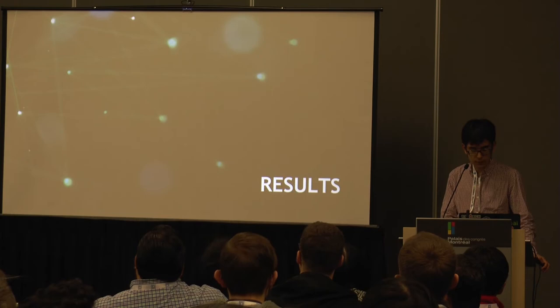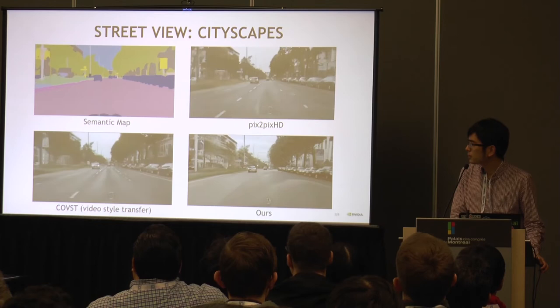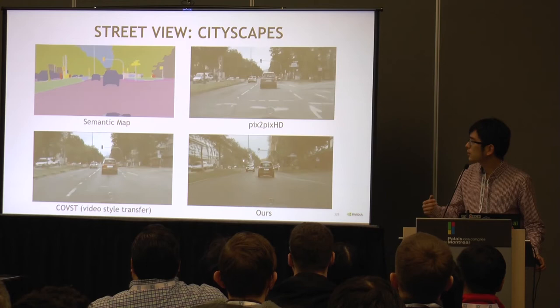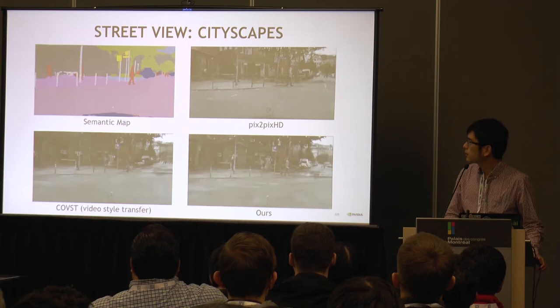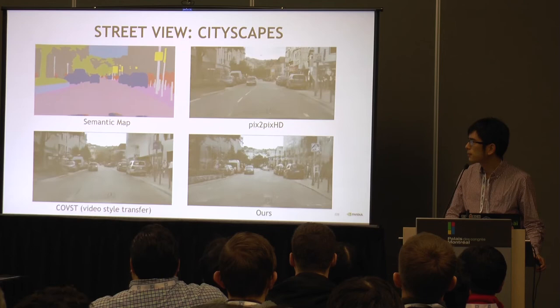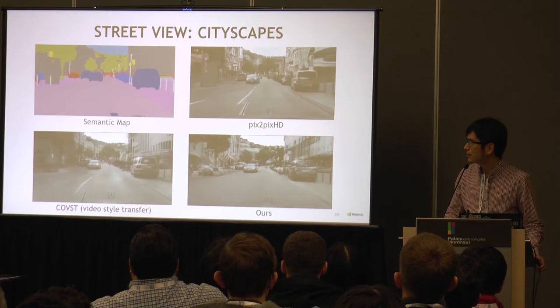Let's look at some results. We compared against two methods: Pix2PHD and CodeVST. Pix2PHD just translates each frame individually and contains a lot of flickering, as you can see. CodeVST adopts some simple temporal consistency constraints, but as you can see, the flickering still persists — so it's not enough for our need. Our result looks temporally smooth and is much better than these two previous approaches.